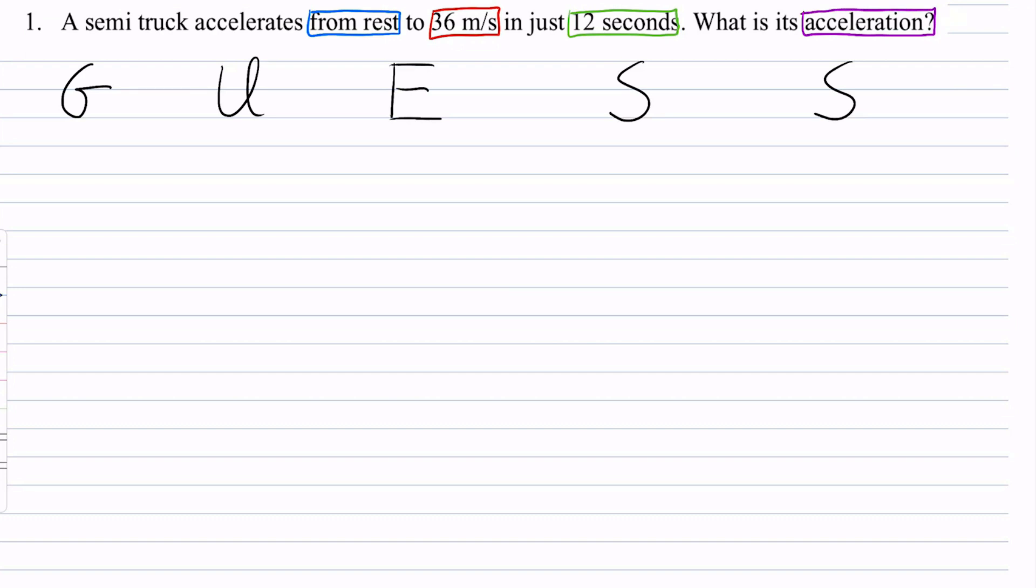I'm also told that I am solving for acceleration. What is its acceleration? That's what we want to find out. So I'm going to put my givens under G. So I'm given an initial velocity of 0 meters per second. Because at rest means you're not moving. I'm given a final velocity of 36 meters per second.